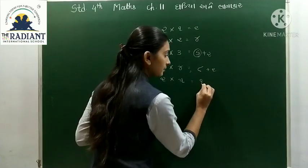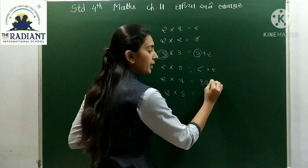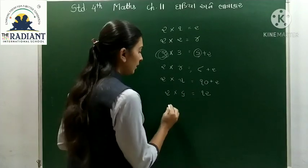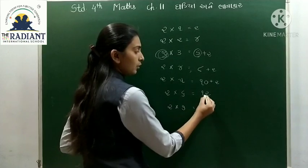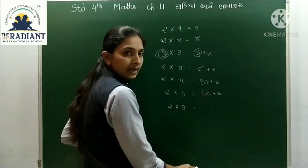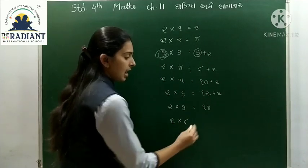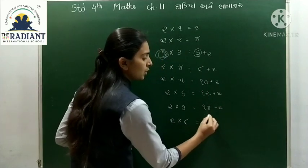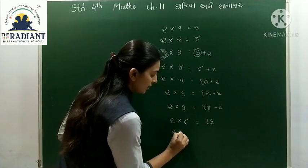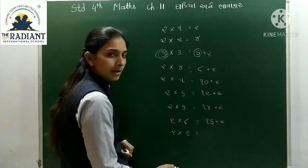2 ચાર 8 - 8 ને 2 કેટલા? 10 થઈ ગયા. 2 ગુણ્યા 5 = 10. આગળ જઈએ: 2 ગુણ્યા 6 - 10 ને 2 ઉમેરીએ, 10 ને 2 = 12. ફરી 2 ઉમેરીએ - 12 ને 2 = 14.